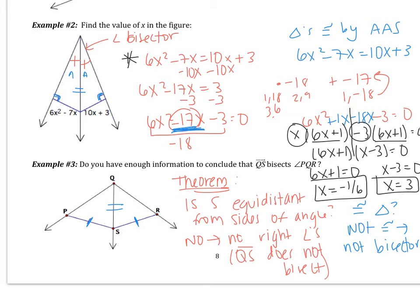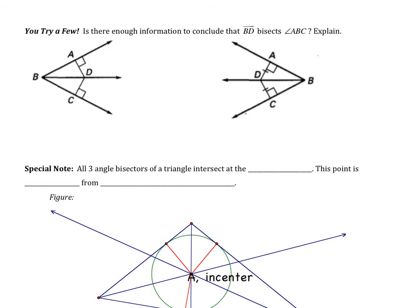Here are the examples I'd like you to try on your own. Remember that you have two ways to solve each problem. The problem is: is there enough information to conclude that BD bisects angle ABC? Use the theorem or determine if the triangles are congruent. Pause the video and come back when you are finished.